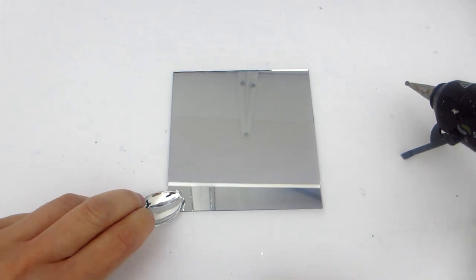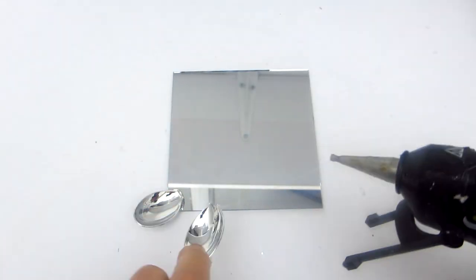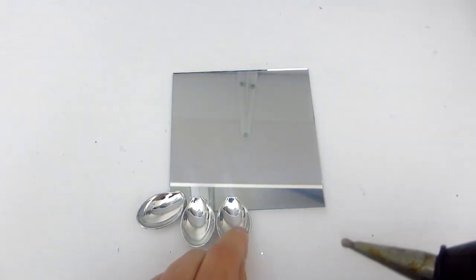Next take the round part of the spoons and apply some hot glue to the bottom third of the spoon on the backside. Then adhere each spoon to the edge of the square mirror to form a frame around the mirror.